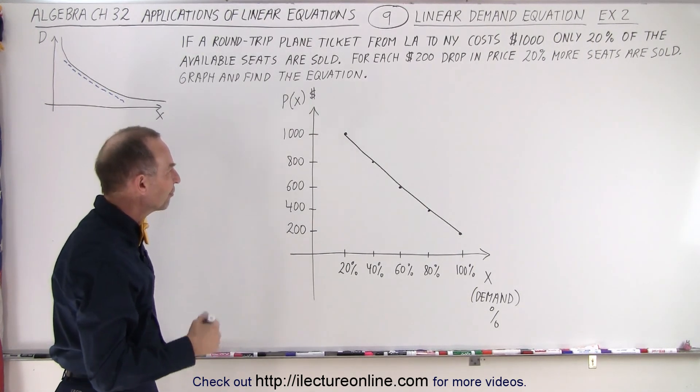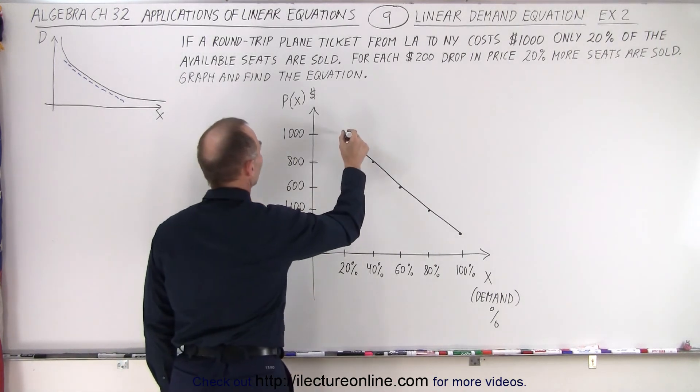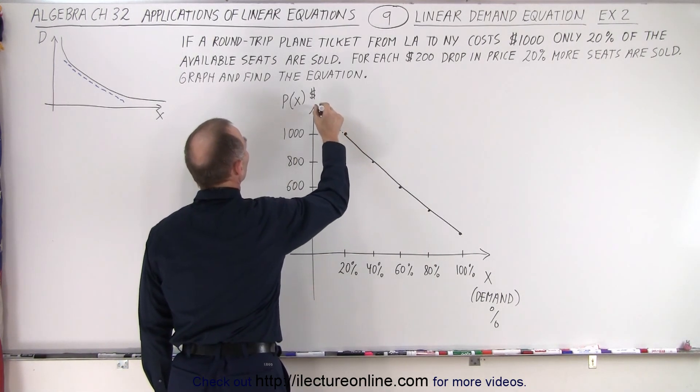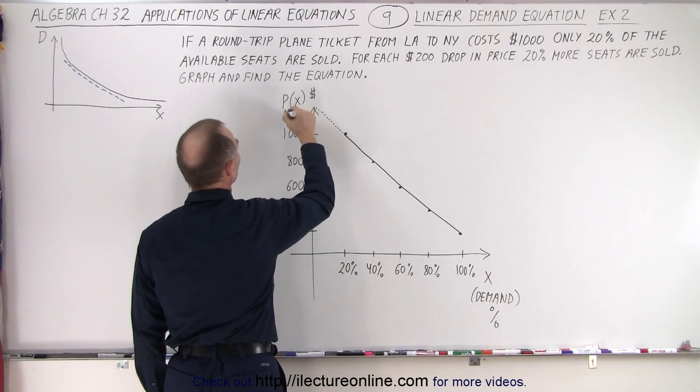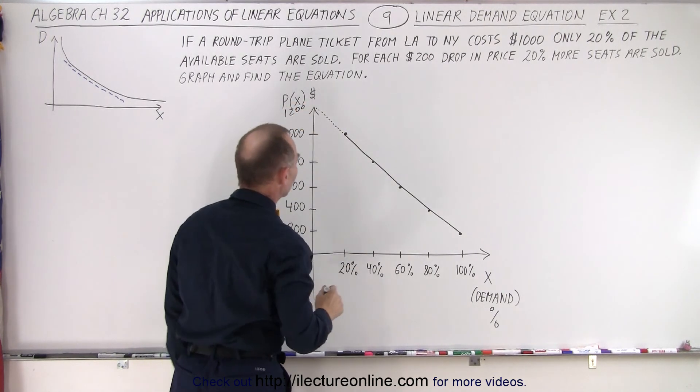So how would we actually find the equation? Well, we need to carry this all the way through. And if we carry this through, we go from 20 down to zero when we get up to $1,200.